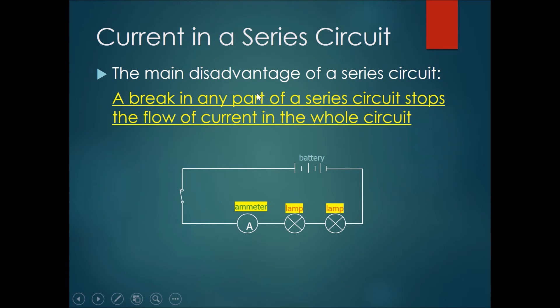Now the main disadvantage of a series circuit is a break in any part of the series circuit stops the flow of current through the whole circuit. So if let's say the wire here broke, then all of these—ammeter, lamp, and lamp—would not work.